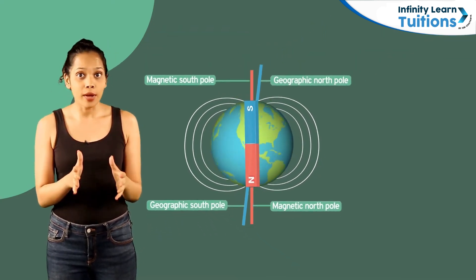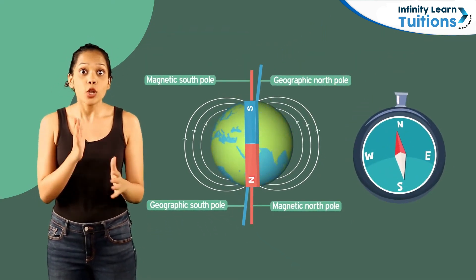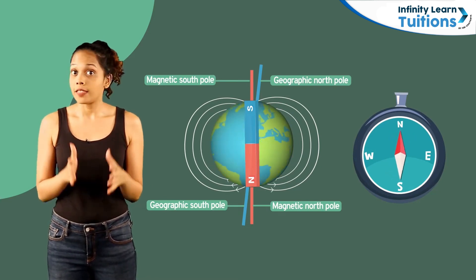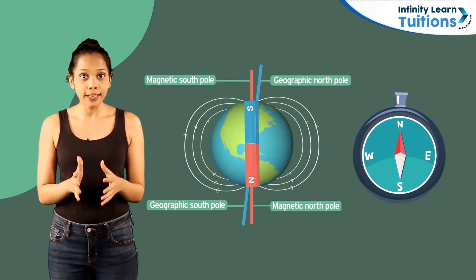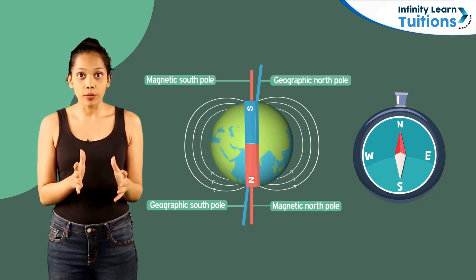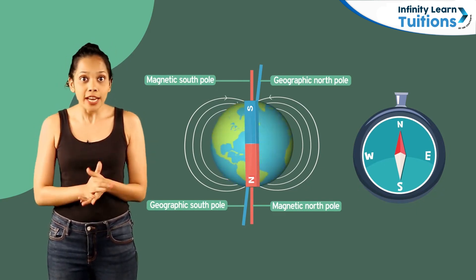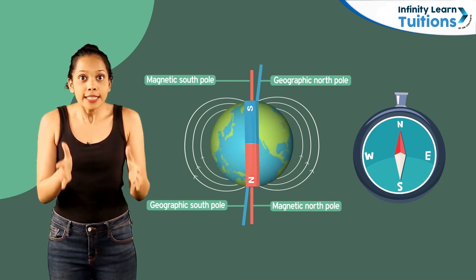That is why the compass needle always aligns itself in the north-south direction. The north pole of the compass needle gets attracted to the earth's magnetic south pole and therefore aligns itself facing the north direction. Isn't this interesting?